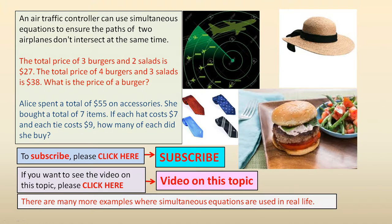Now here's an everyday problem. It's a very useful problem that you can solve using simultaneous equations. The total price of three burgers and two salads is $27. The total price of four burgers and three salads is $38. What is the price of a burger?